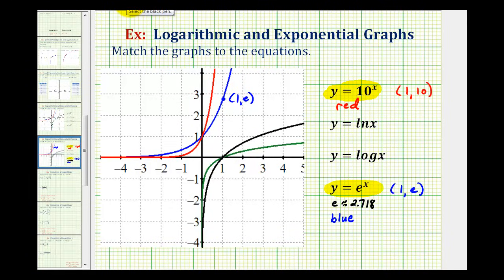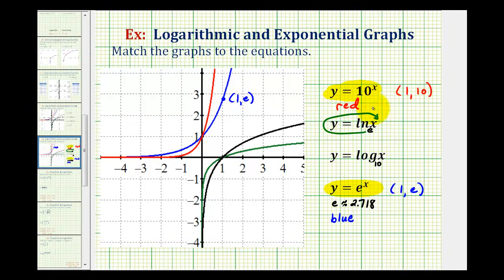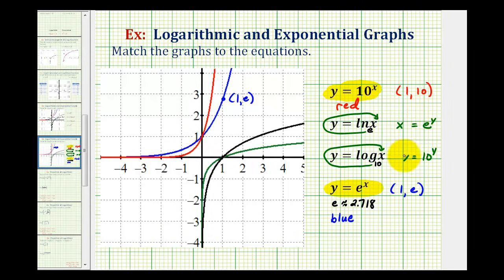Now let's look at the log functions. We have y equals natural log x and y equals log x. Natural log x is log base e, and for y equals log x, this is common log — since there's no base listed, we assume it's base 10. If we wrote these as exponential functions, y equals natural log x means e to the power of y equals x, and y equals log x means 10 to the power of y equals x. These are equivalent equations that mean the same thing.